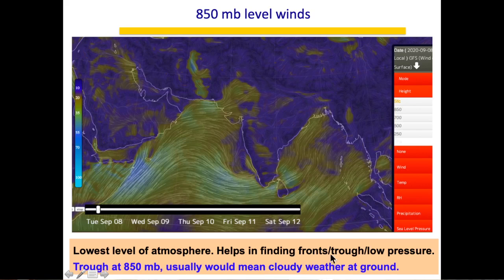Fronts are confluences of warm and cold air and are visible at the 850 mb level. A trough or low pressure at 850 mb generally means cloudy weather at the ground — chances of rain increase, and daytime temperatures may be lower because clouds block sunlight. Conversely, a ridge or high pressure at 850 mb means very hot, heat-wave-like conditions.